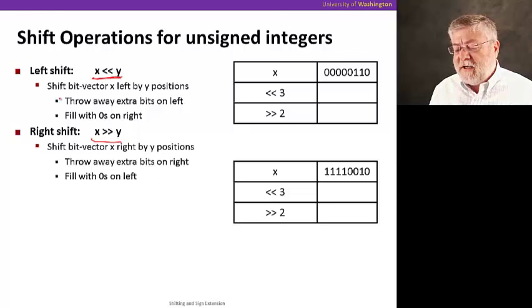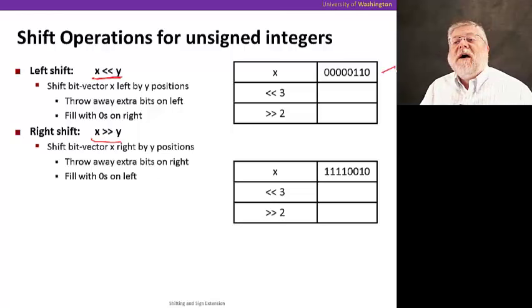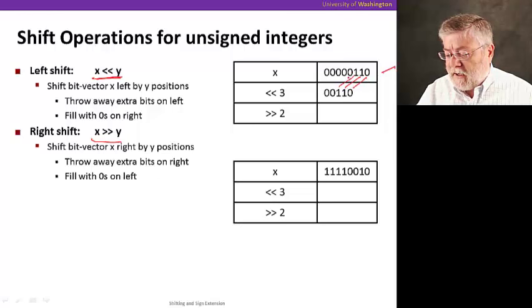When we say x shifted to the left by y, what we mean is we're going to move the bit pattern of x to the left by that many positions, the value of y. Let's take a look at this example here. Here's the number 6 represented in 8 bits, and we're going to shift to the left by 3. So in this case, the y value is 3. And what we'd expect to have happen is that those bits would move over by 3 positions.